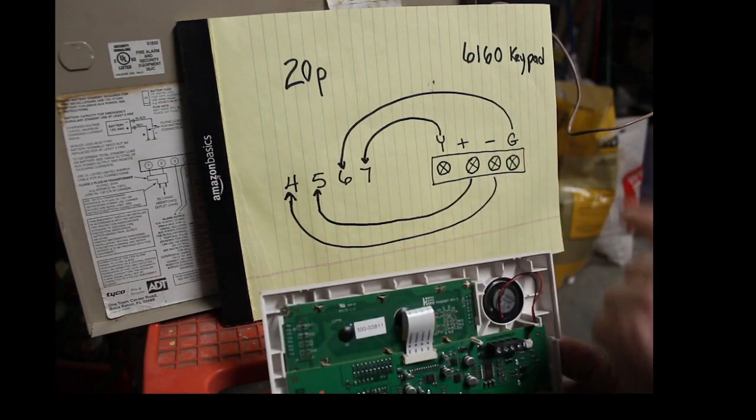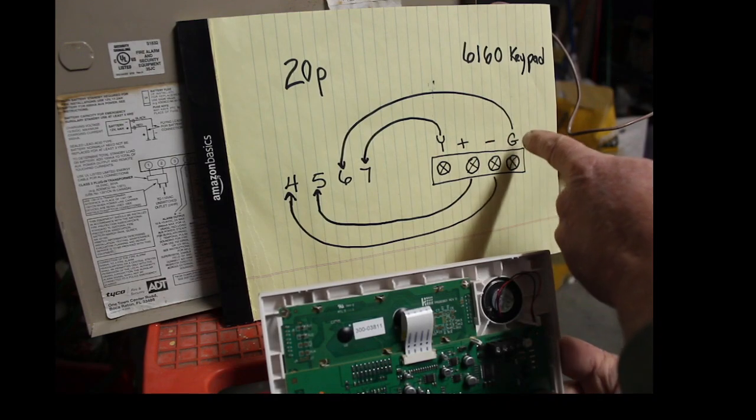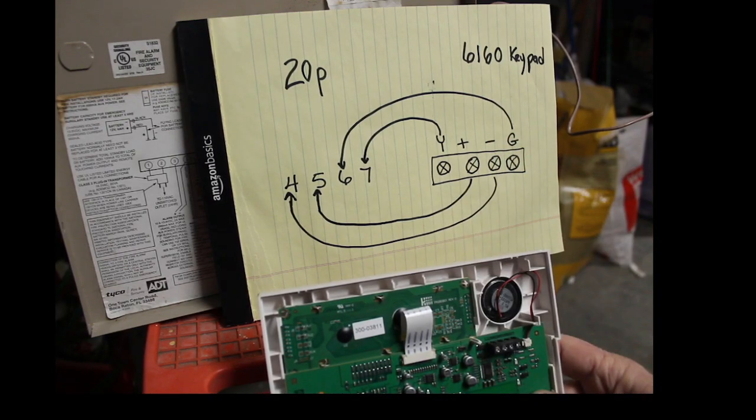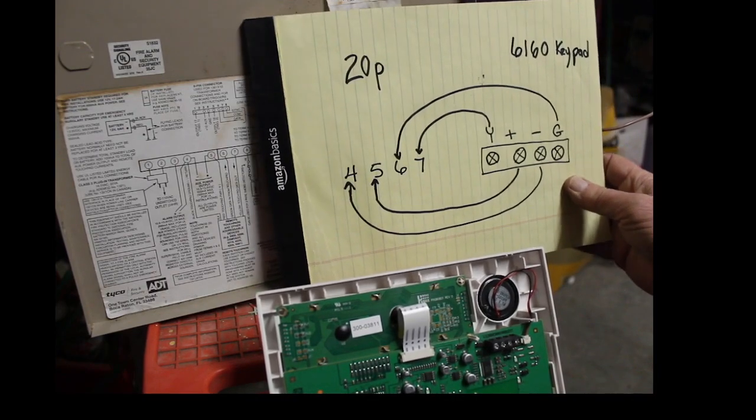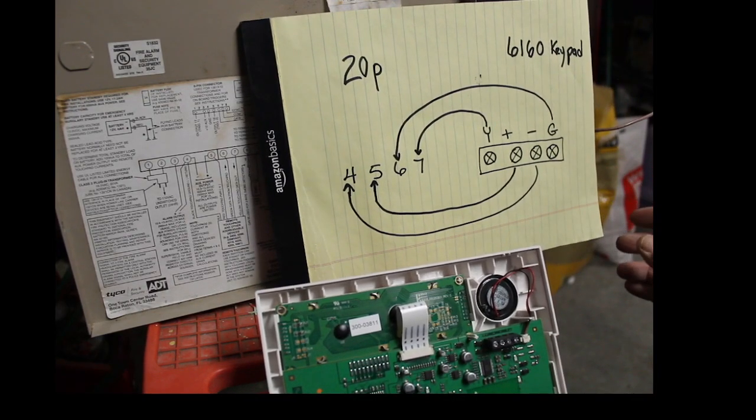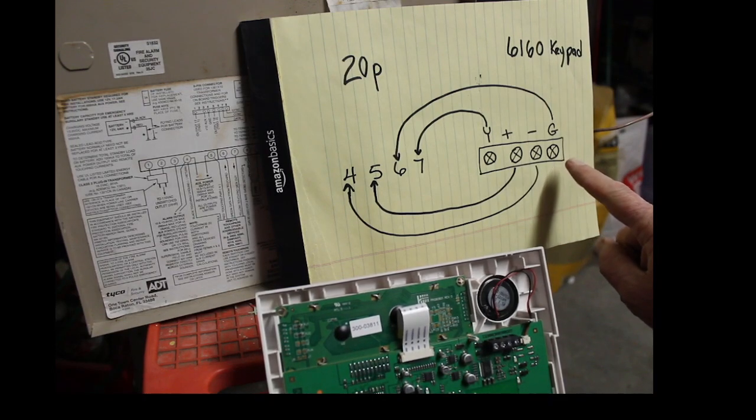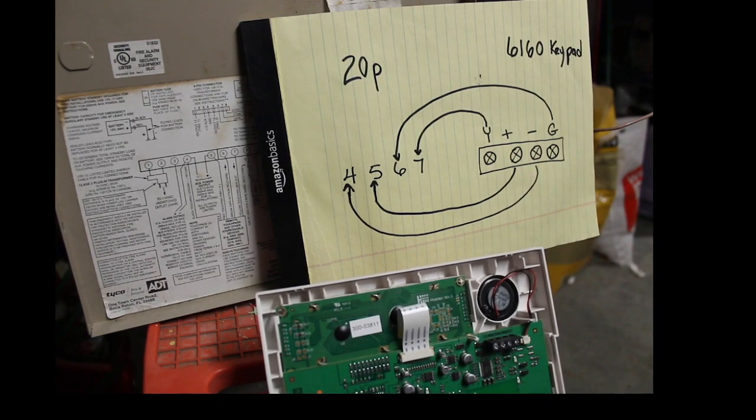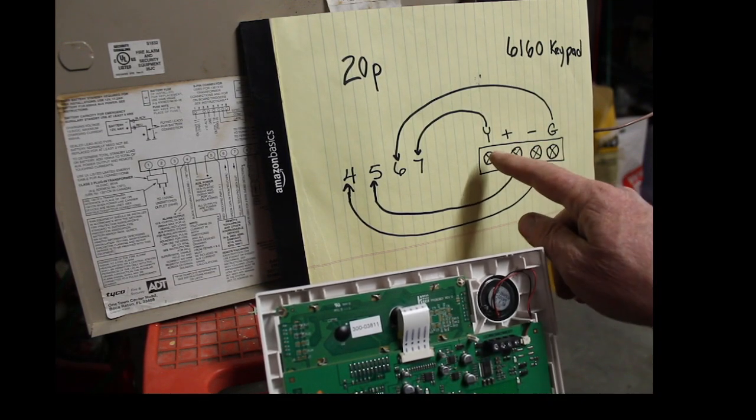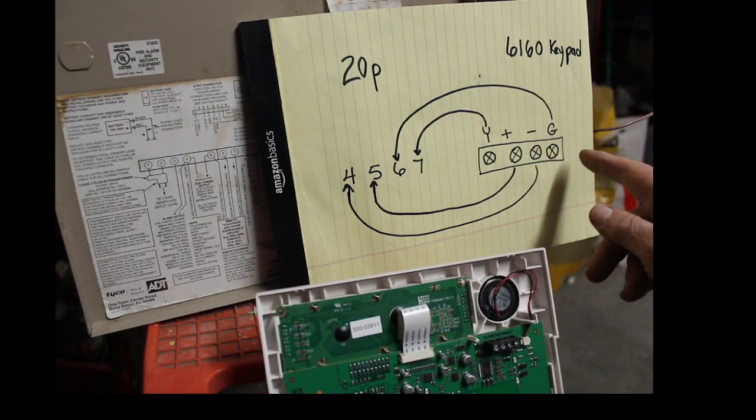And then on your keypad it says yellow, positive, negative, and green. Okay, basically right here, the terminal 6 is data - what does that say on there - data in, and terminal 7 is data out. Alright, I wish they would have marked it that way here instead of yellow and green. I wish they would have said data in and data out, would have been so much easier.